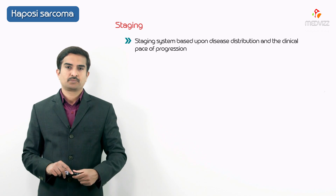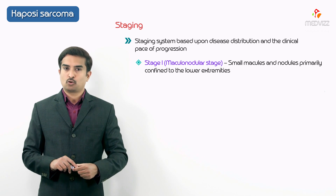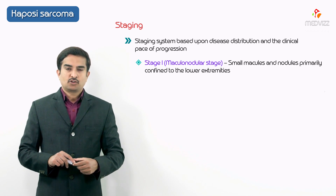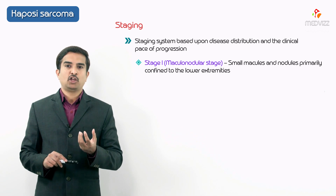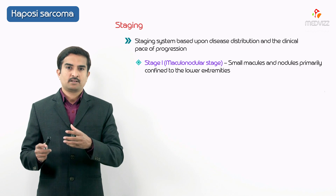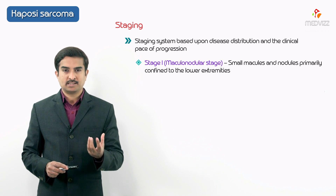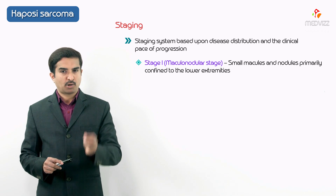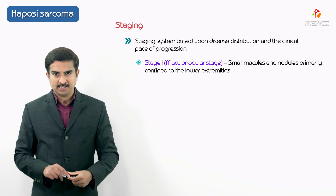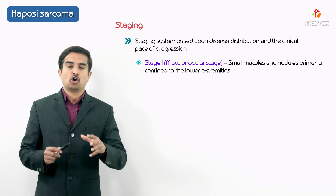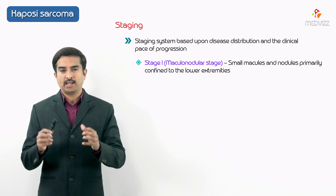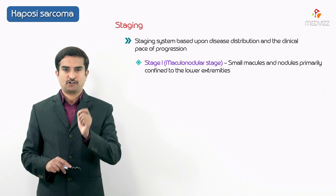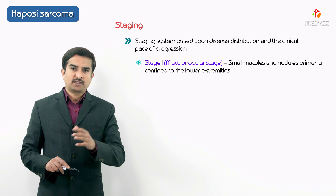Stage 1 of Kaposi sarcoma is also called the maculo-nodular stage. Macules are smaller in size and there will also be a presence of nodules — that is why it is called the maculo-nodular stage. These macules and nodules are primarily confined to the lower extremities, which is why lesions are more commonly located there.